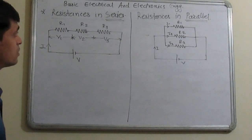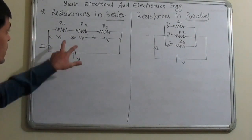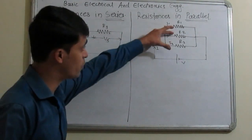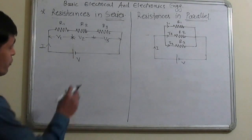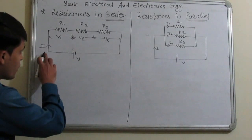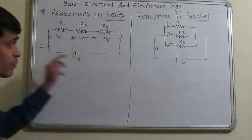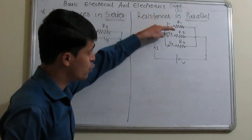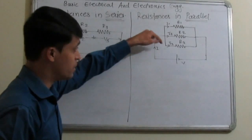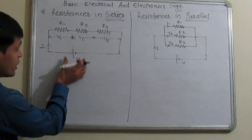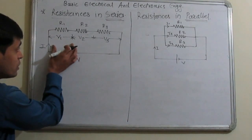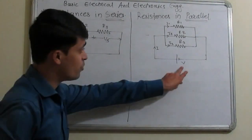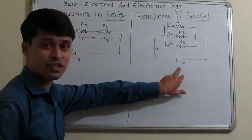Now we will see resistances in series and resistances in parallel. When resistances R1, R2, R3 are connected in series, the current flowing through all the resistances is the same, but in a parallel combination the current through each resistance is different — through R1 it is I1, through R2 it is I2, through R3 it is I3. When voltage is applied across the series combination, the voltage across each is different: V1, V2, V3. But in the parallel combination, all resistances have the same voltage V.